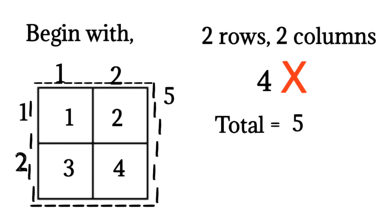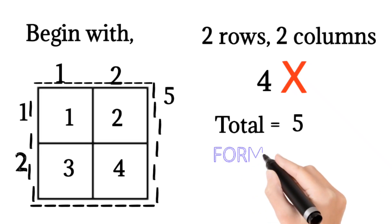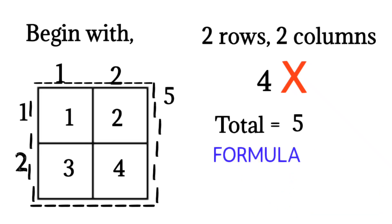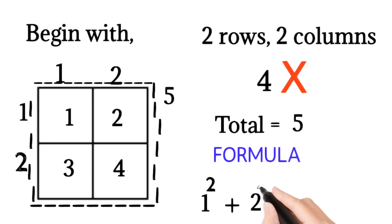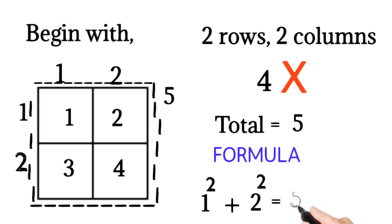I can find the number of squares using one formula, that is 1² plus 2². If you calculate this, you will get 1 plus 4 equal to 5. So the number of squares in this figure is 5.